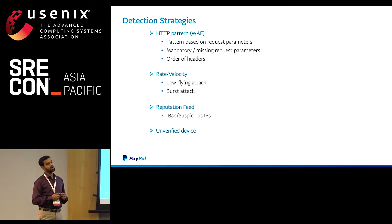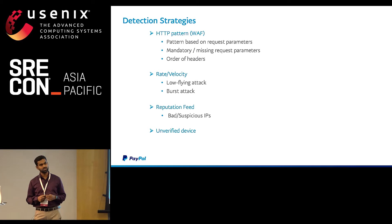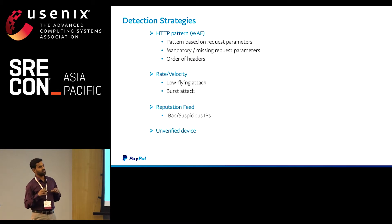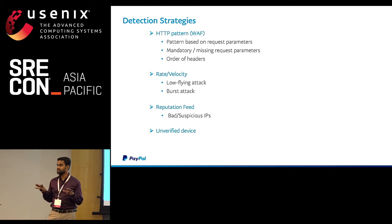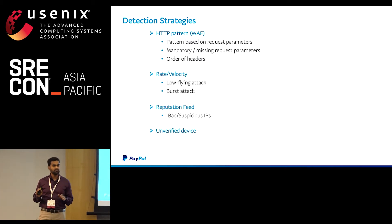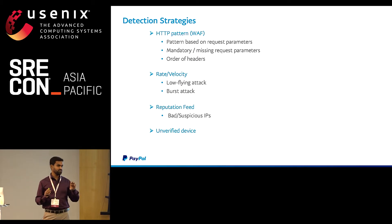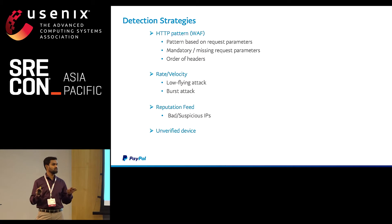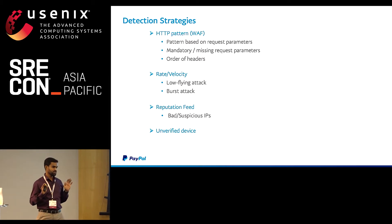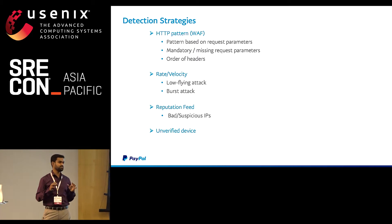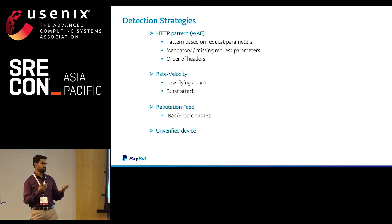Another interesting strategy is the unverified device. Most attacks happen from new devices — a device from which my site has never received a legitimate request. If we can identify the exact device fingerprint, and from that fingerprint we have never received a legitimate request, we treat that request differently and apply some mitigation. A new user genuinely coming to a site for the first time would also be treated differently, with specific mitigations we'll cover next.